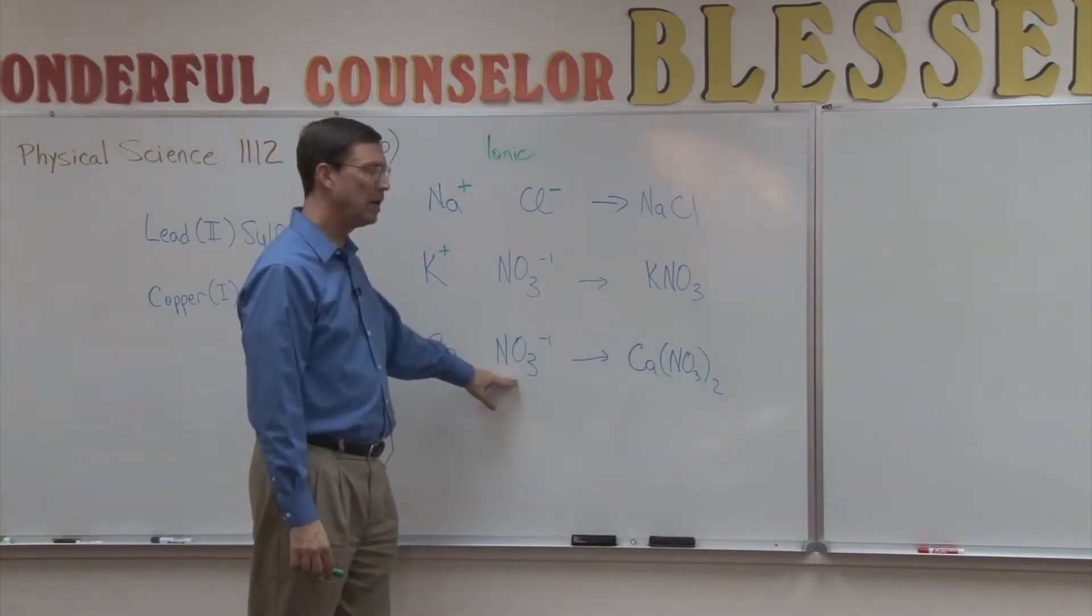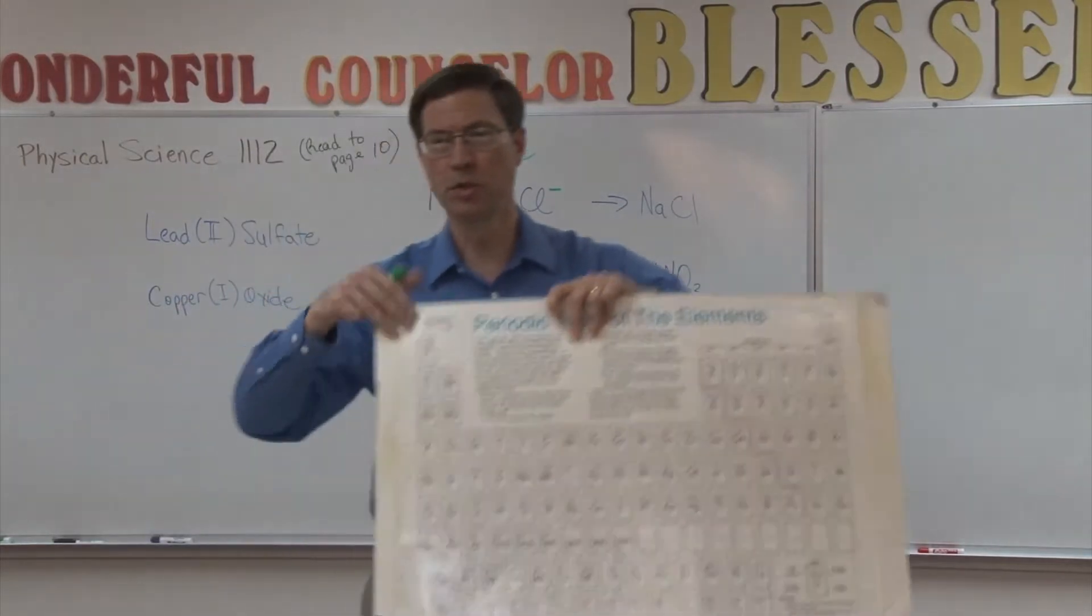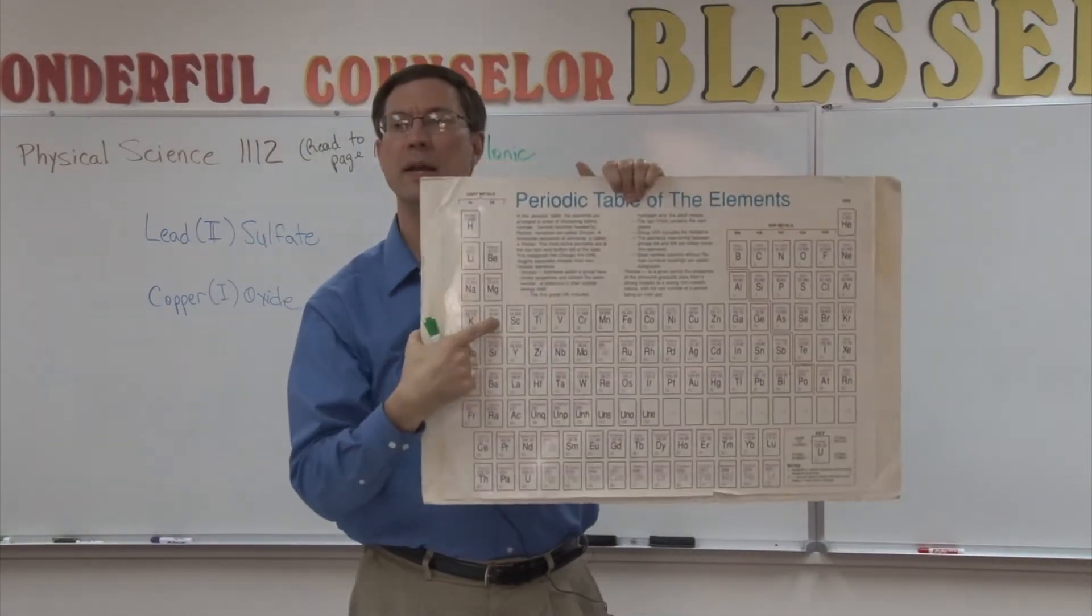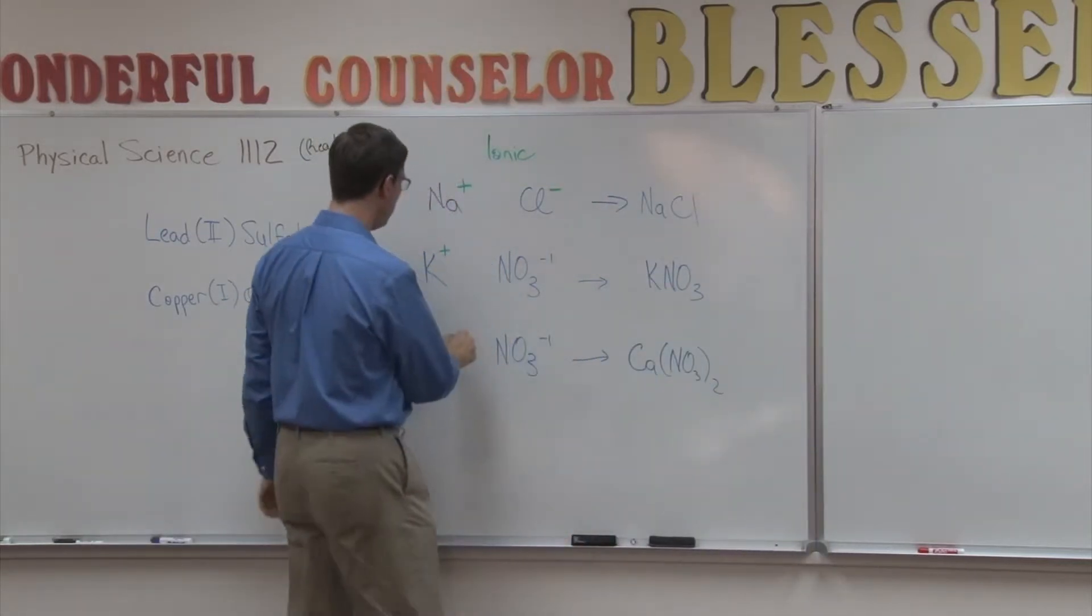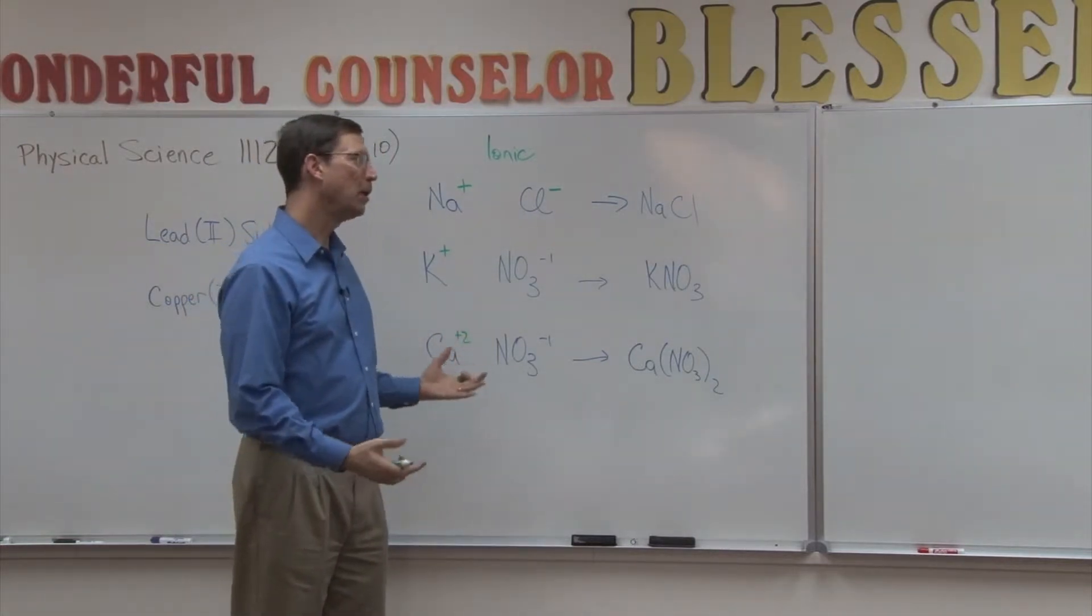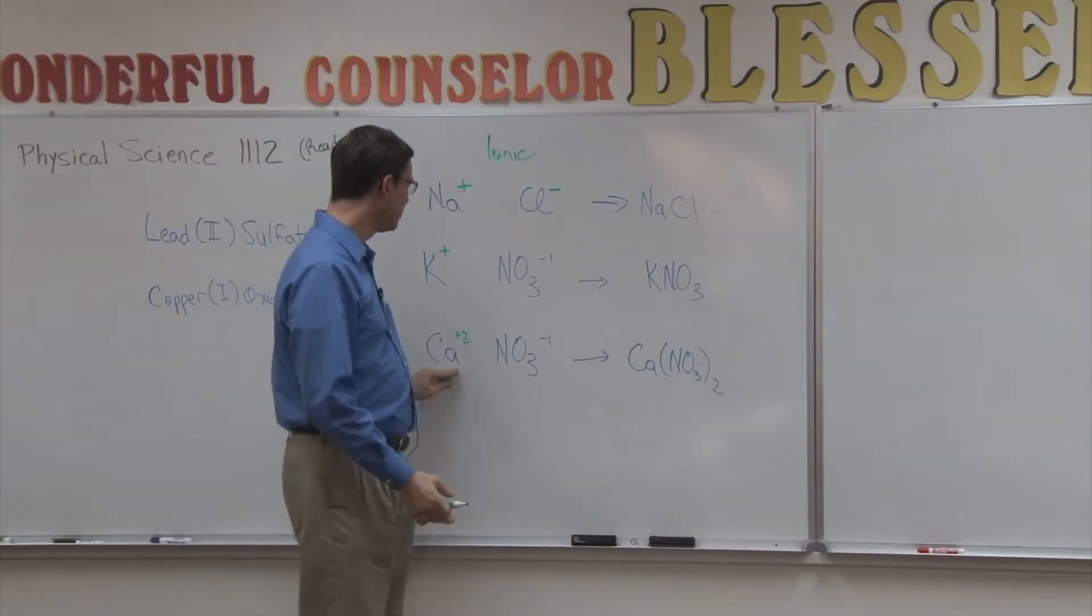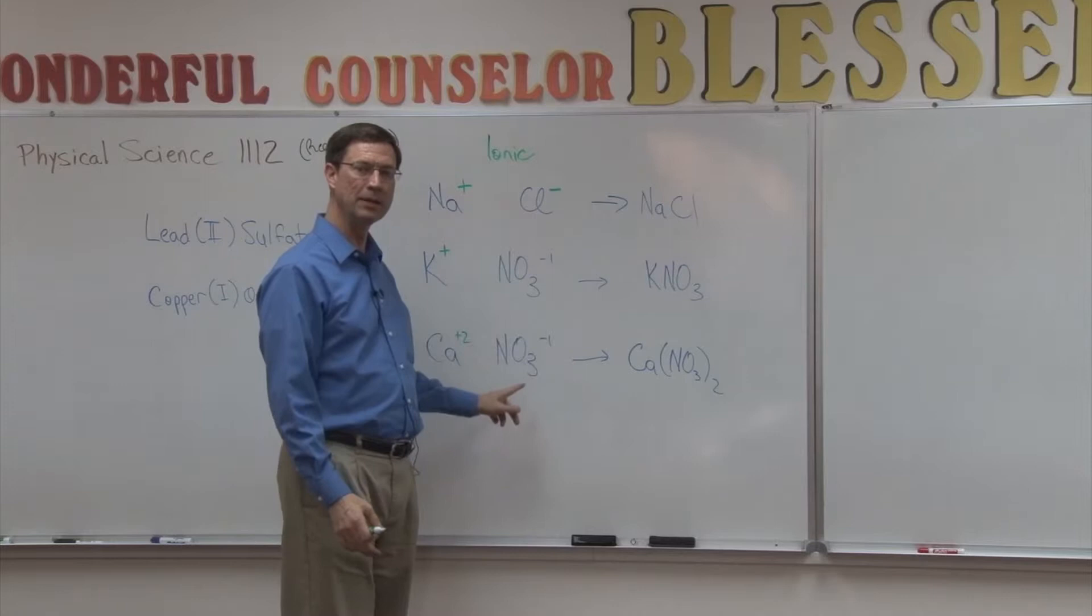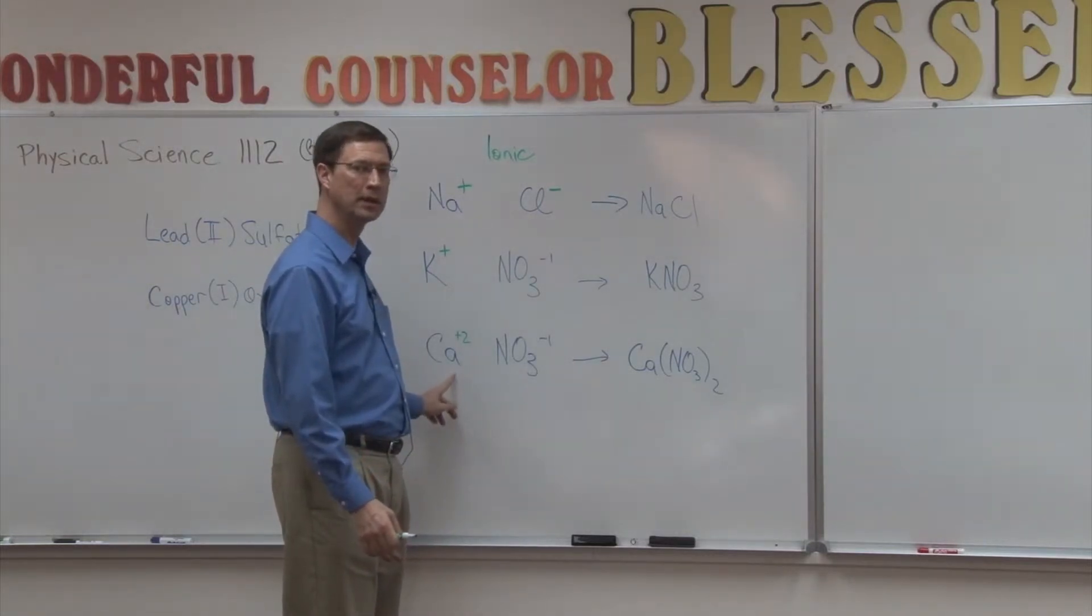Now let's look at this. We're going to keep the nitrate, which is negative one, but calcium is in family two. It's right here. Because it's in column two, it has two electrons in its outer shell. So it tends to want to give up both electrons, giving it a positive two charge. Now we've got a problem. For this molecule to form, it has to be neutral. If I have a positive two charge, and this is only a negative one, I need two of these to balance the electrons.